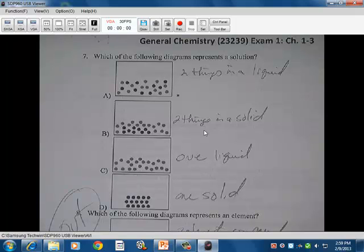But basically, two things in a liquid. Because they're freely moving. They're not rigidly together. B, you have two things in a solid. So that's not a solution. C, you have one liquid. Things are kind of moving around a little bit. And D, you have one solid. So the answer is A. Two things in a liquid is a solution.